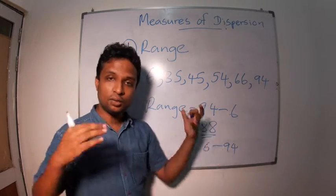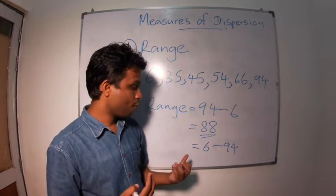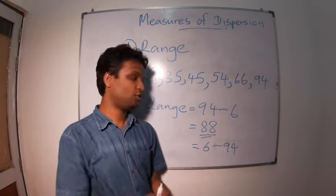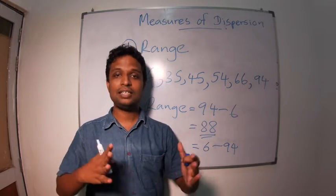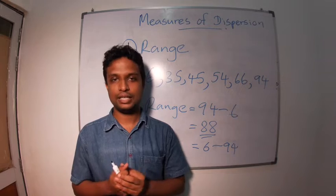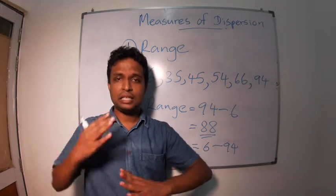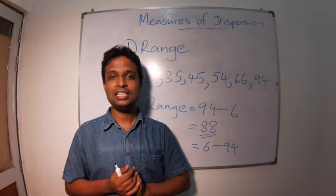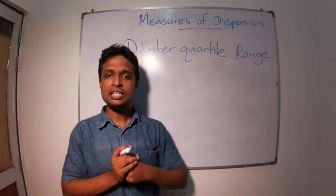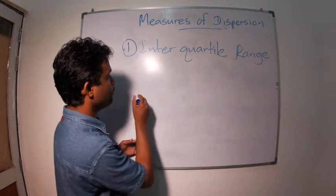94 and 6 are outliers. Because of that we overestimated the range. Even though we say that 88, only two students are there as outliers. To avoid that there's another measure we call Inter-quartile range. In inter-quartile range we draw the total distribution.